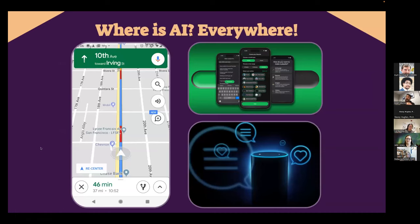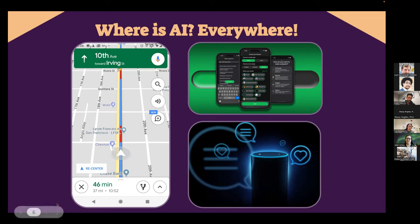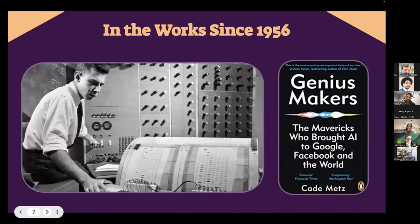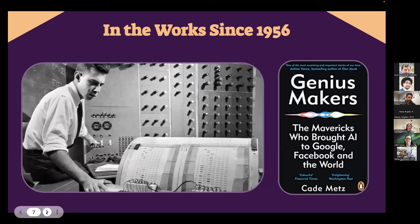AI is really with us everywhere. It helps us get to work, route around traffic jams, and helped me route around car accidents on my way to a school district this morning. It picks the next song in our Spotify playlist and the next movie we might watch on Netflix. And to lesser or greater success, it helps us interact with Google Home, Siri, and Alexa. There are a million different examples of how that works.